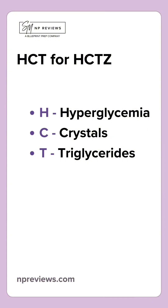H is for hyperglycemia, as thiazides can raise blood sugar levels. C is for crystals, as they can increase uric acid, which can trigger gout.